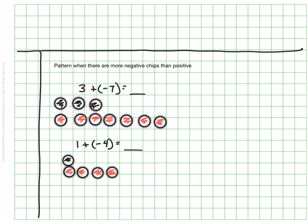In the first example, 3 plus negative 7, I'm going to cross out my zero pairs, as I like to do. And I'm left with 4, but this time they're negative. On my other example, I'm going to cross out my zero pair, and I'm left with three chips. And again, this time they are negative.